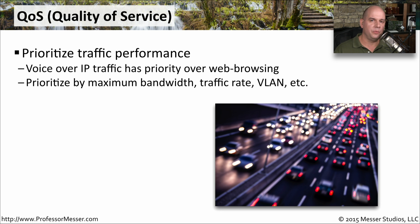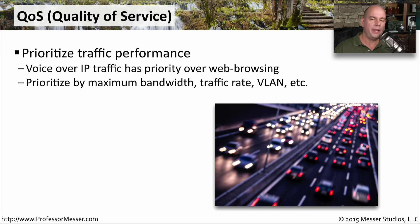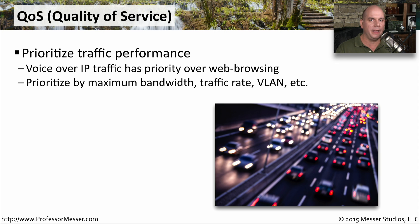From a networking perspective, we have to be concerned about all of these different protocols going over the network and how they'll affect all the other traffic. One way to manage this is through quality of service, or QoS, where we can prioritize certain types of traffic over others. We may want Voice over IP to have priority over someone who's simply surfing the web. That way you're able to set bandwidth requirements, set traffic rates, and assign separate VLANs to make sure that important voice communication is able to get through even if somebody else is performing a file transfer or surfing the internet.